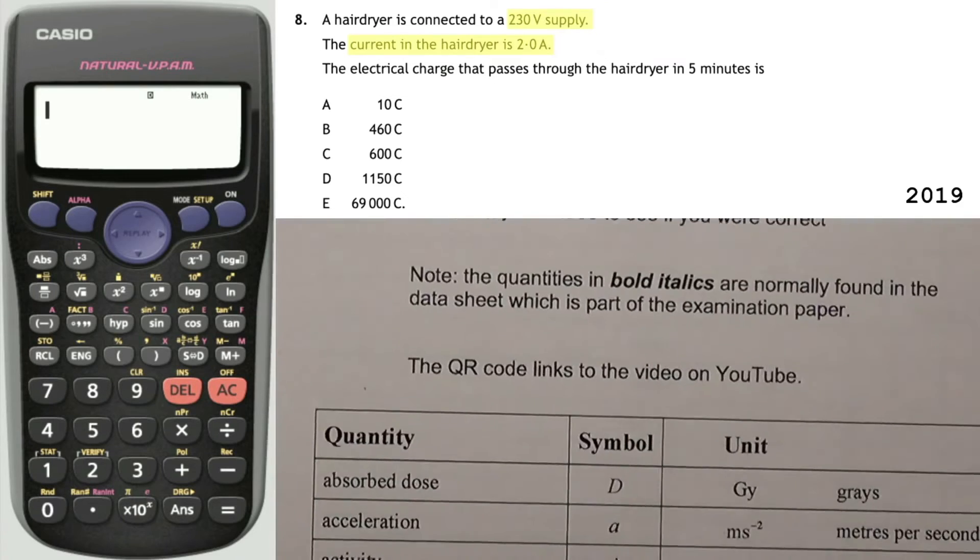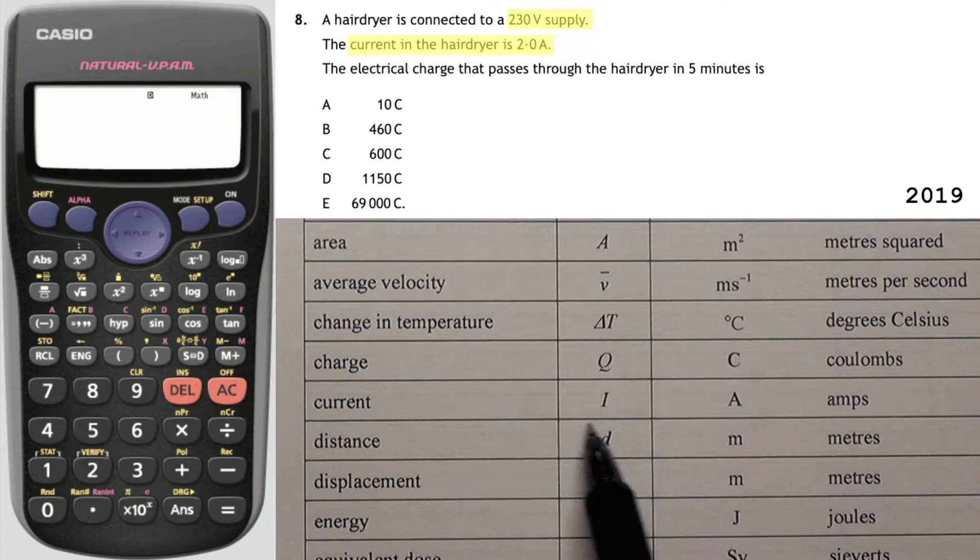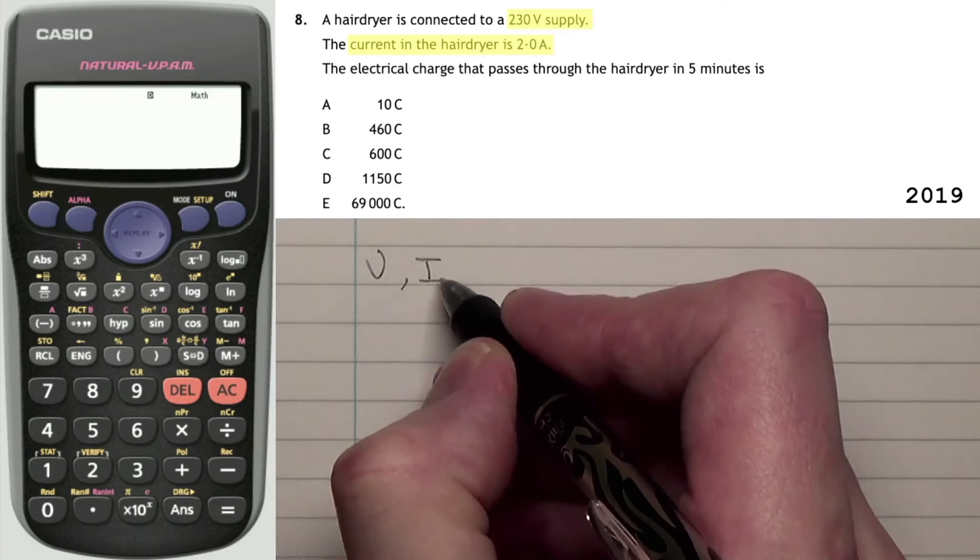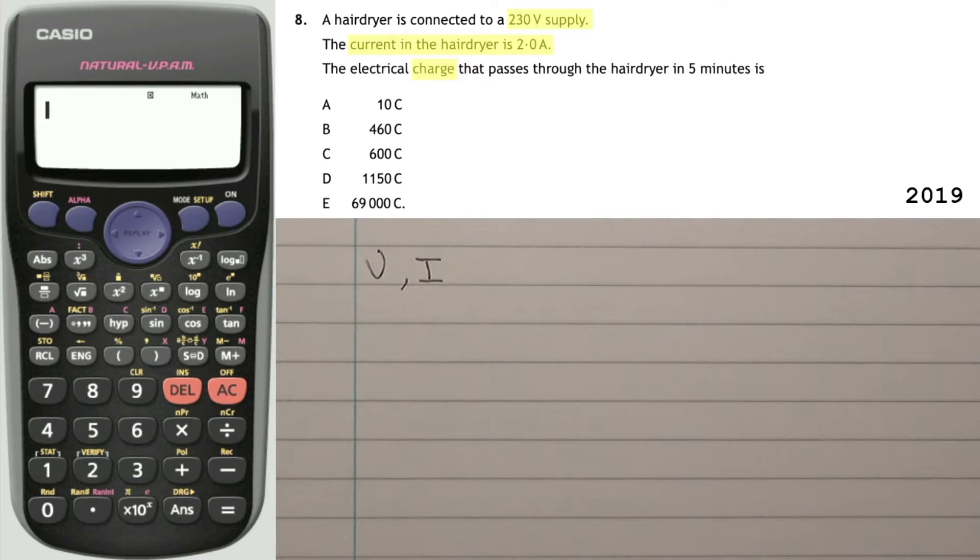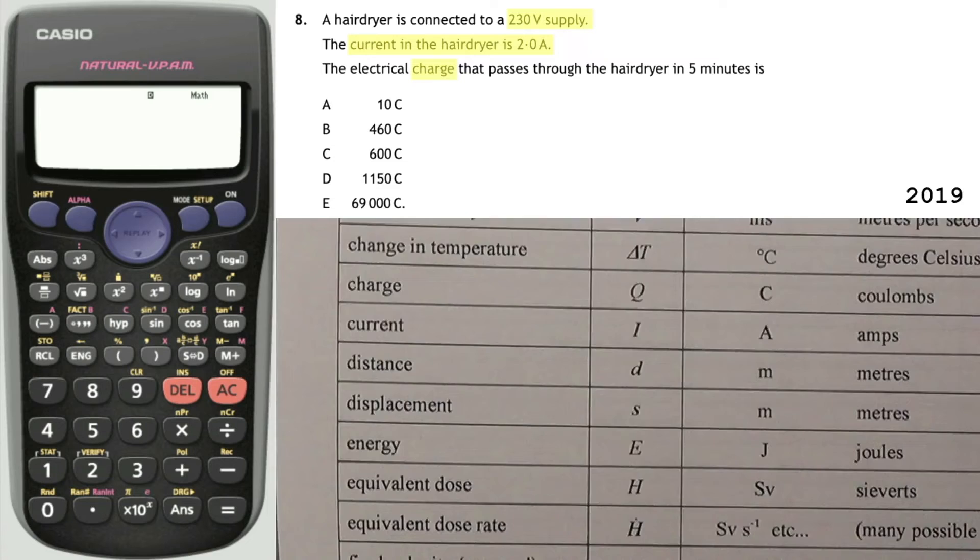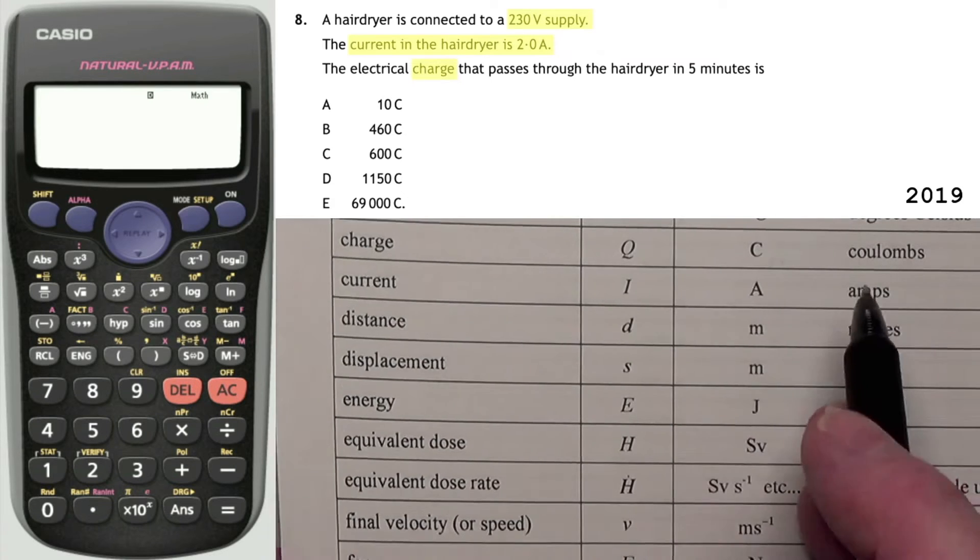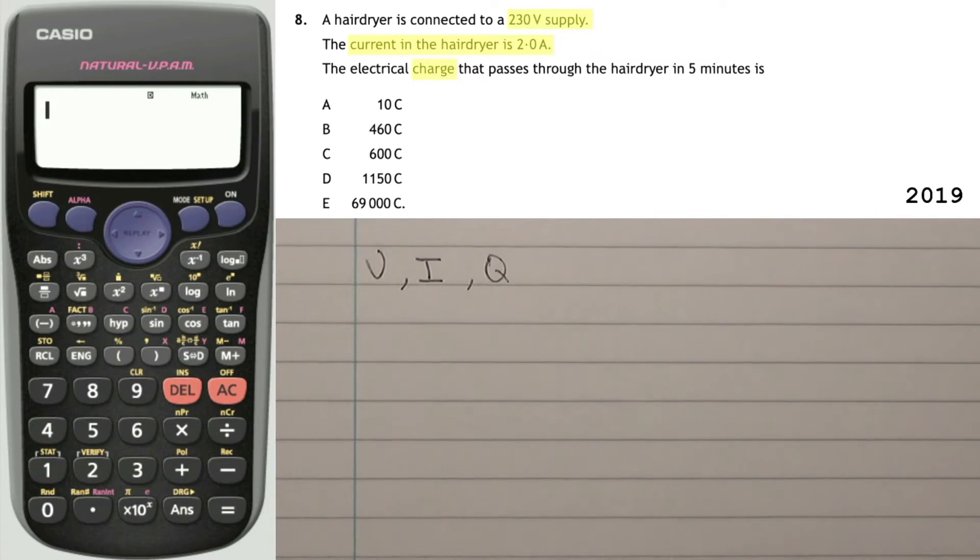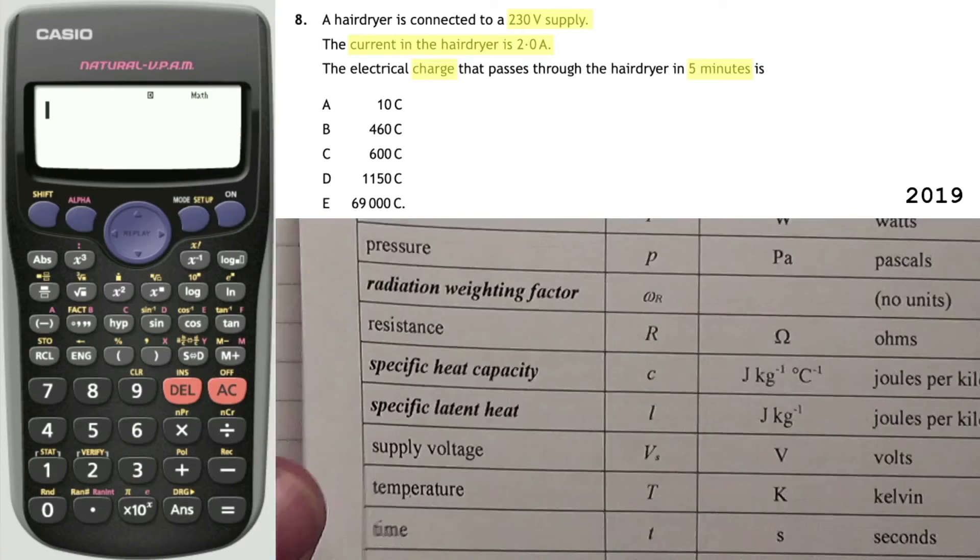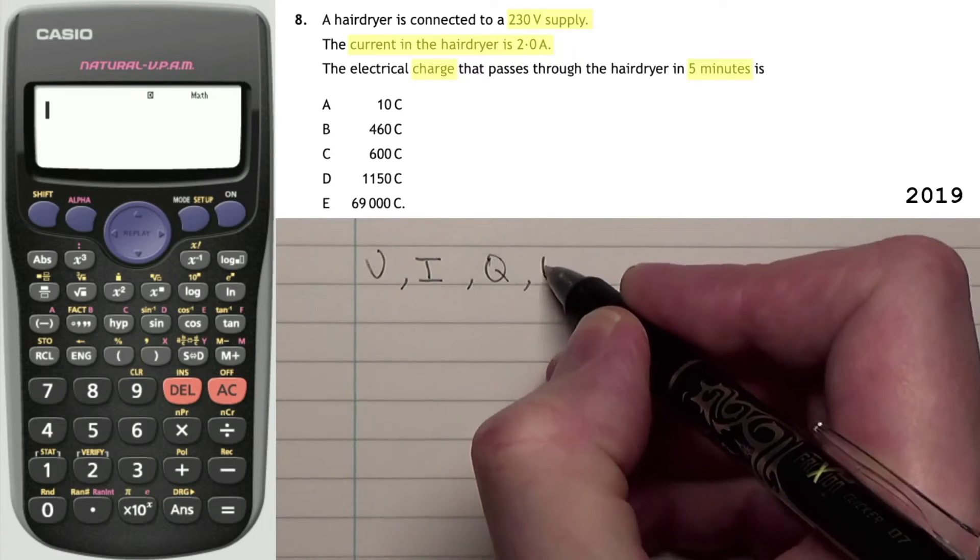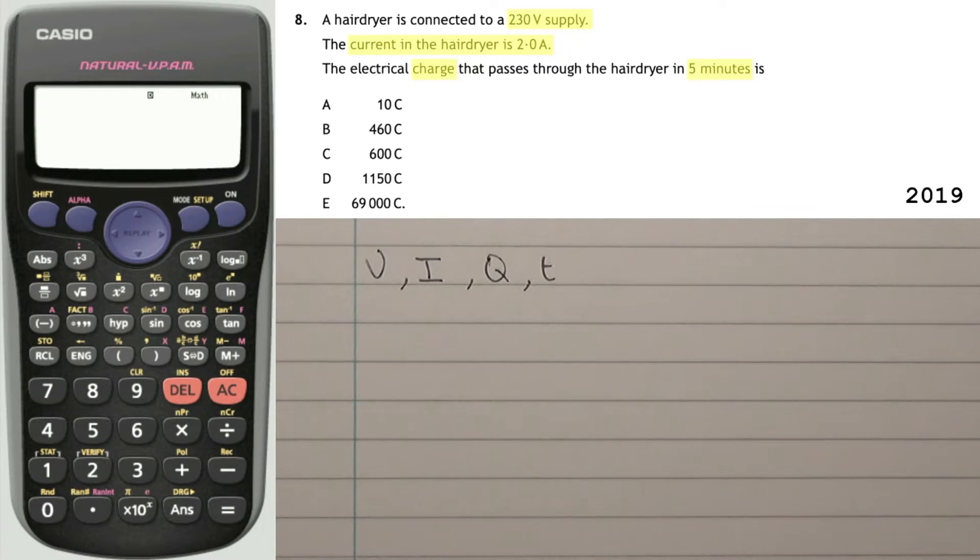The next thing that's mentioned is current. So the current in the hairdryer is 2 amps. Current is here, that's given the letter I and it's measured in amps. So we'll need to find an equation which has an I in it. Next up, it's talking about charge. In fact, that's what we're trying to find, the electrical charge. You'll not find it under electrical charge, but you will find it here. Charge in the relationship sheet, that would be a capital Q. And finally, it mentions 5 minutes. Well, 5 minutes is a time. In the sheet, time is a small t.